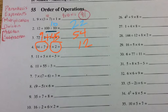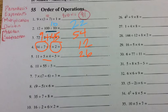I want you to try number five, and then we'll see if we got the same answer. Hopefully you got 26 as your answer, because 5 times 4 is 20. You take 20 and add it to 11, that would be 31. And then you'd go 31 minus 5, which would be 26.